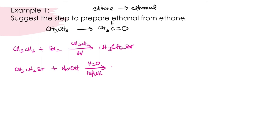And we will get ethanol. So from ethanol, we oxidize by using mild oxidizing agent, which is by using PCC in CH2Cl2, and we will get ethanol.